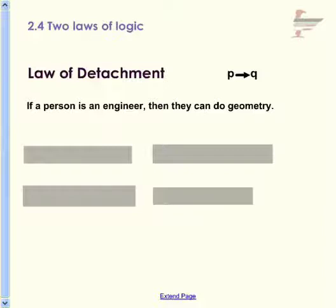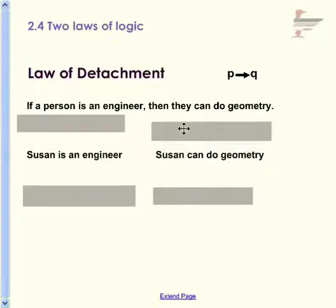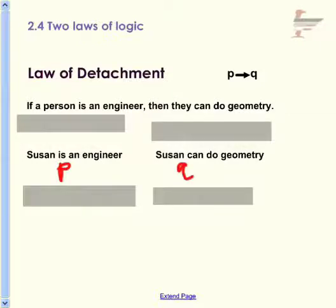The law of detachment uses conditional statements, if-then statements, to be able to make conclusions or to be clear that you cannot make a conclusion. Starting with the conditional statement: if a person is an engineer, then they can do geometry. We have Susan is an engineer, therefore we can conclude that Susan can do geometry. That is a logical conclusion. We had P — the P portion of the statement was true, therefore we can conclude that Q is also true.